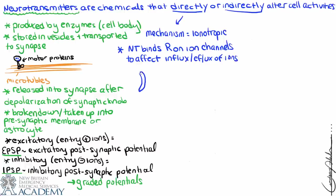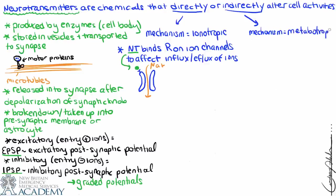We can see that with our ligand-gated ion channel — the neurotransmitter binds and it opens, allowing sodium to enter. What will be coming up for us is being able to remember which neurotransmitters and which receptors are associated with which ion channels. The other mechanism associated with neurotransmitters is indirect, and we refer to that as metabotropic.